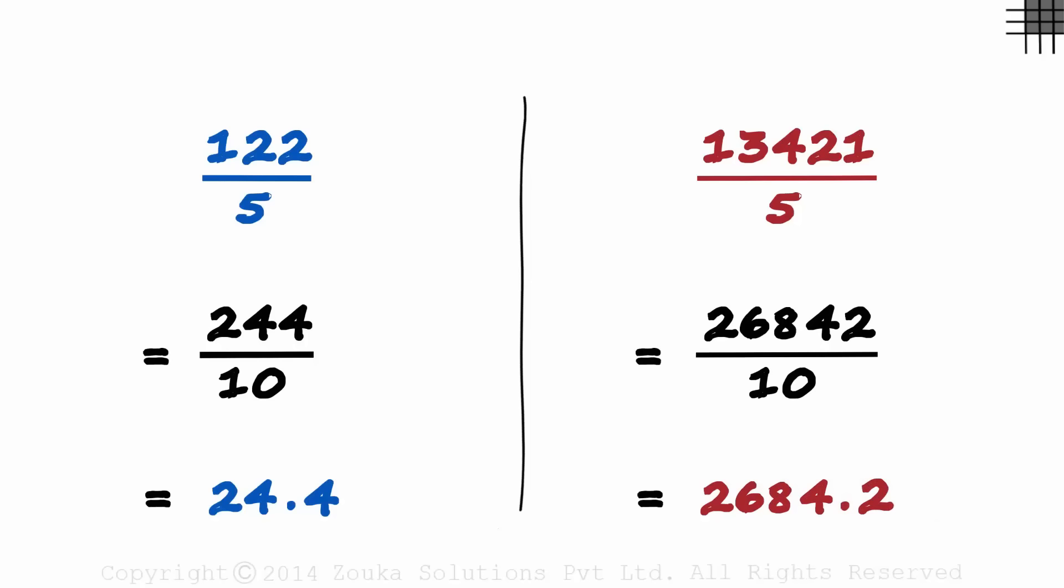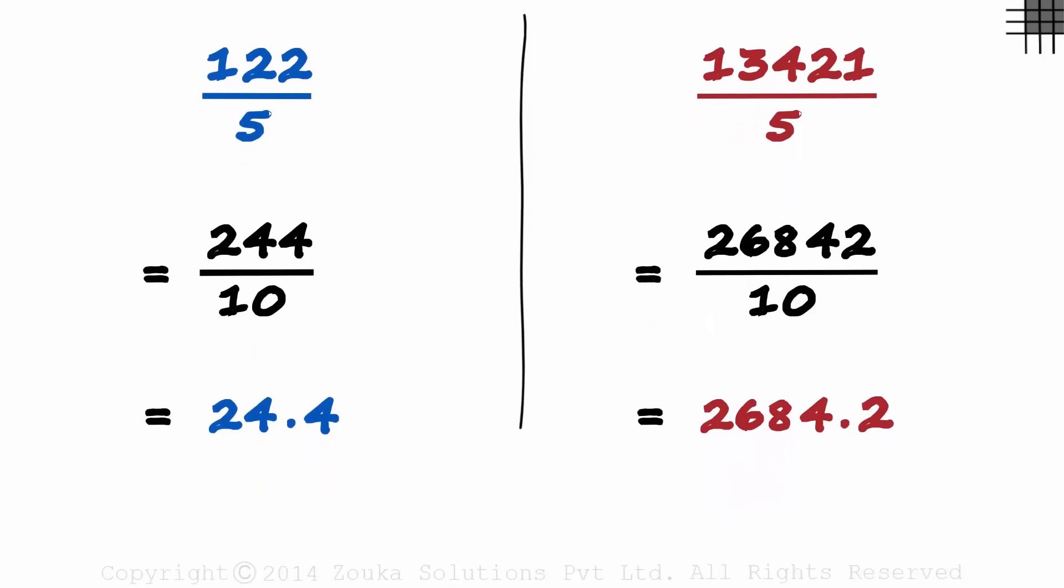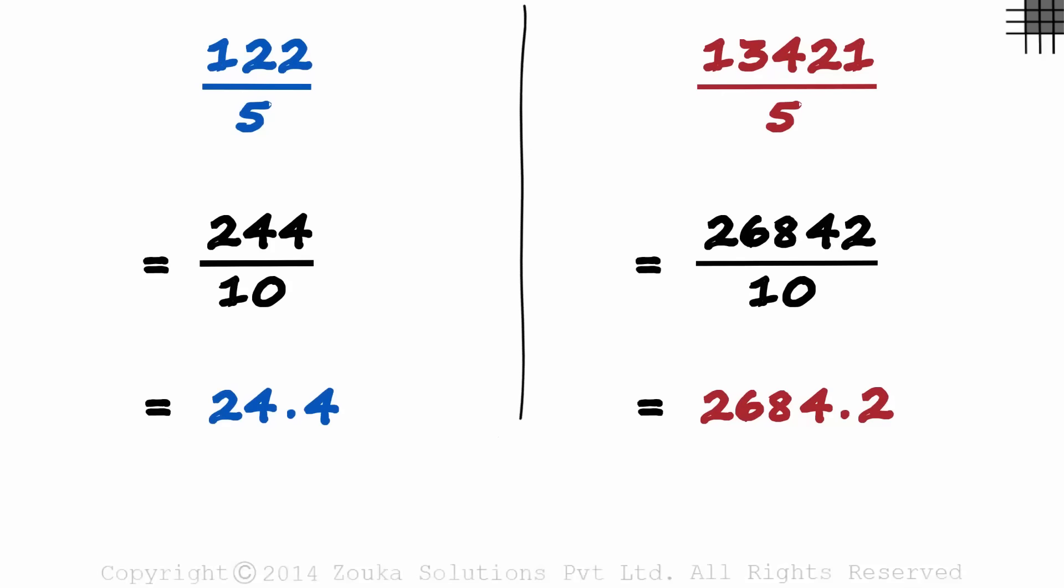So this was an easier technique to divide a number by 5: multiply by 2 and divide by 10. Over the next two parts of this session, we will look at quicker ways to divide numbers by 25 and 125.